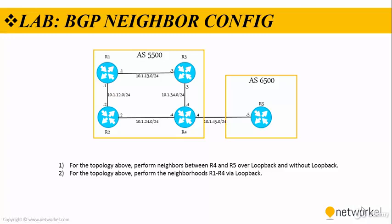Alright guys, that's the lab. We're going to take a look at BGP neighbor configuration together. We have two steps to accomplish. In the first step, for the topology above, we need to perform neighbors between Router 4 and Router 5 over loopback and without loopbacks. These guys are EBGP peers because they are in different autonomous systems.